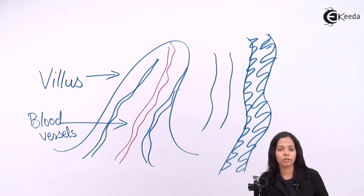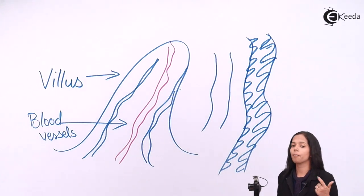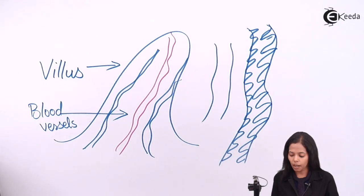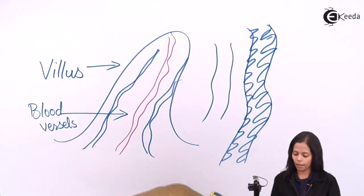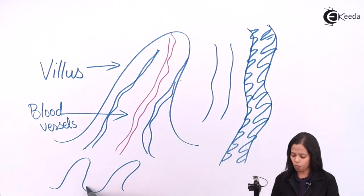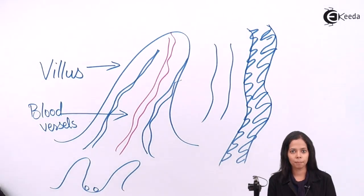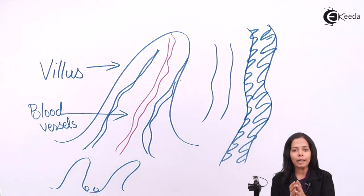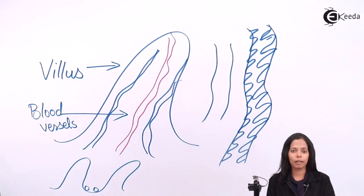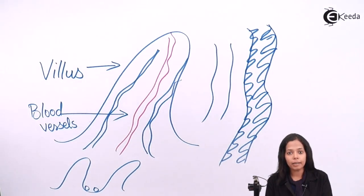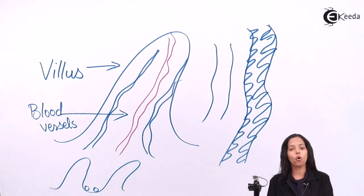There is a presence of some intestinal glands and some lymphatic glands. Intestinal glands are present between two villi. If this is one villus and this is another villus, you can see two openings. The first opening is for the intestinal gland. The intestinal gland secretes intestinal juices.